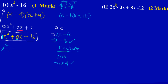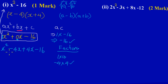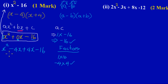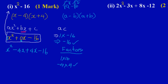So I can now write: x squared, replacing the zero x with my factors — minus 4x plus 4x — minus 16. Now, factorizing by grouping, I look at the first two terms. X is common to both, so I take out x: x into x squared leaves x, and x into negative 4x leaves negative 4. So I have x(x minus 4).